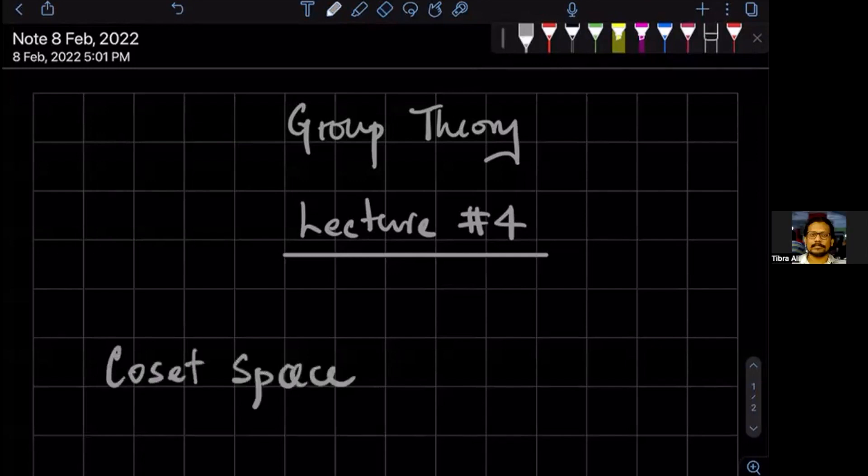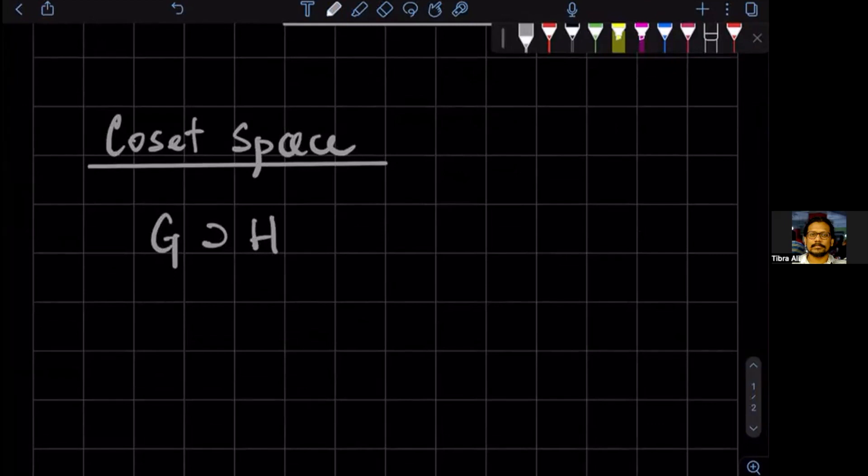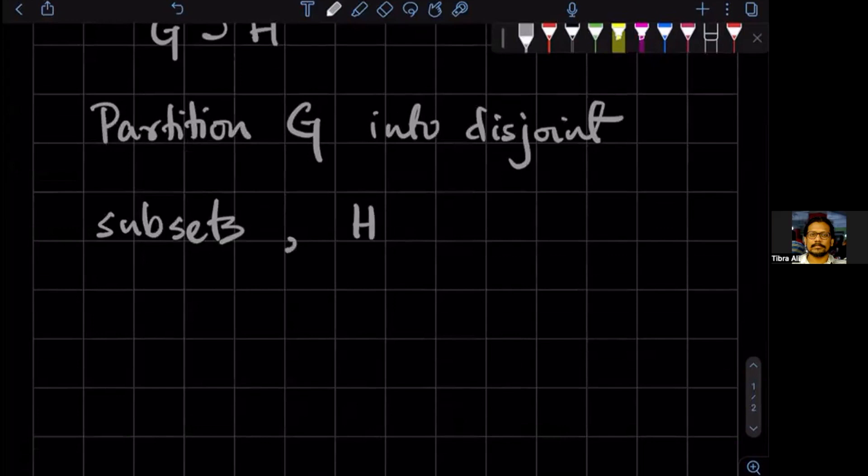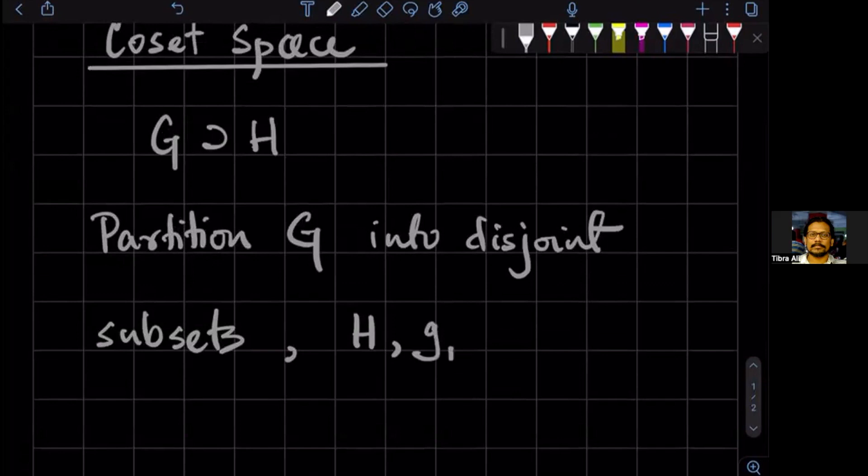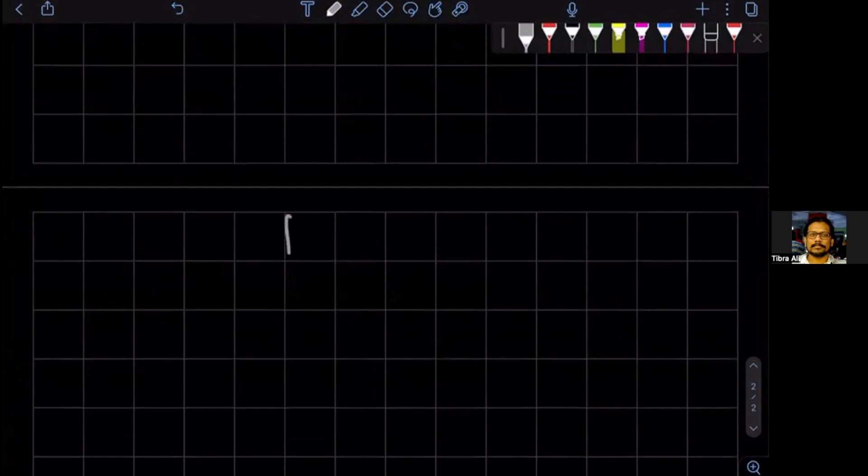To understand coset space you first need to understand what a coset is. If you have a group G and H is some subgroup, then we can partition the group, partition the set that is the group into disjoint subsets. These subsets would be the subgroup H itself, then say g1 H, another coset g2 H, dot dot dot, say g_k minus 1 H. So there are k cosets.